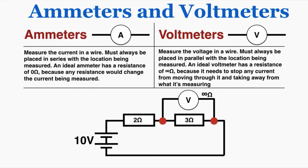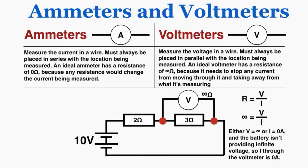We don't want any current moving through the voltmeter. Ideally it wouldn't affect how much current moves through the 3 ohm resistor — it wouldn't take any current for itself. If the voltmeter has infinite resistance, then since R equals V over I, infinity equals voltage over current, which means the current I must equal zero, because the battery isn't providing infinite voltage. So making the resistance infinite ensures no current passes through the voltmeter, leaving the current in the circuit unaffected.